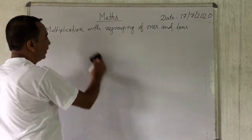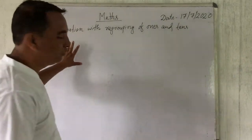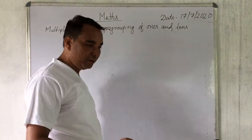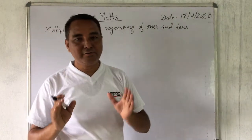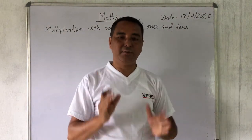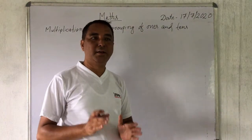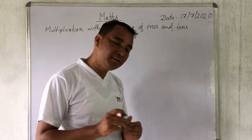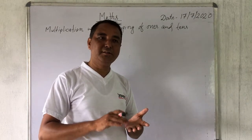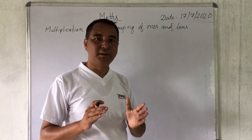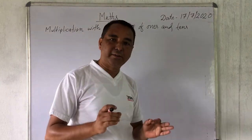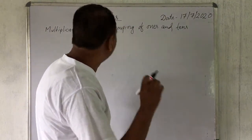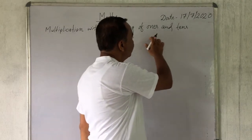Today we are doing a little bit different — that is regrouping, or we can say we have to keep a carryover. Every day I remind you that we have to concentrate on the multiplication table. Whenever you get the time, you must learn the multiplication table, because when we want to do multiplication or division, we need the table. If we know the table properly, we can do any type of multiplication or division in our next classes. Today's topic: multiplication with regrouping of ones and tens.